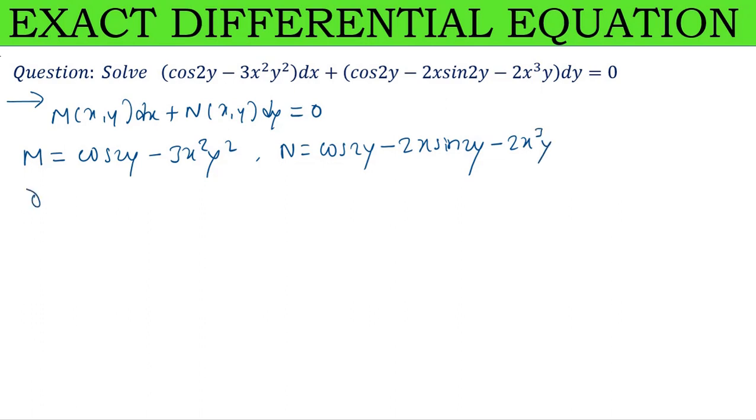Differentiate M with respect to y partially, treating x as constant. cos 2y differentiated gives -sin 2y times 2, so -2 sin 2y. The second term 3x²y²: 3 and x² are constants, y² differentiated gives 2y, so -6x²y.